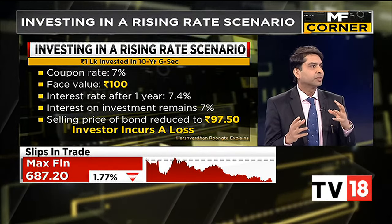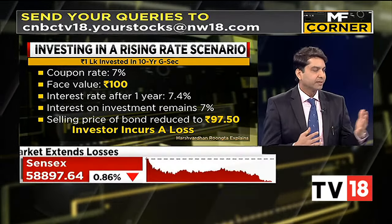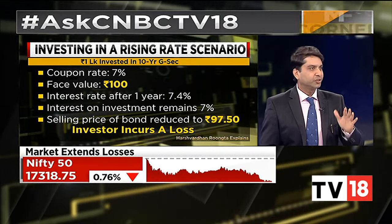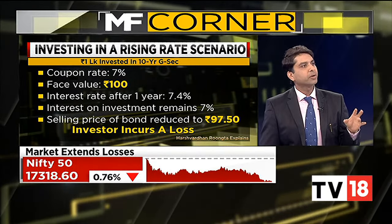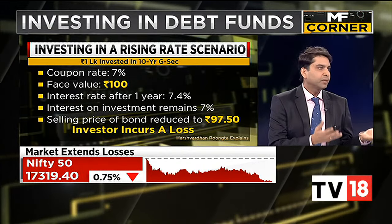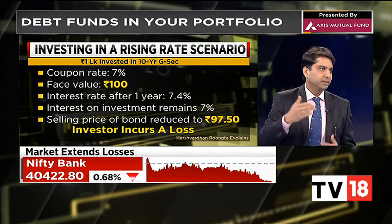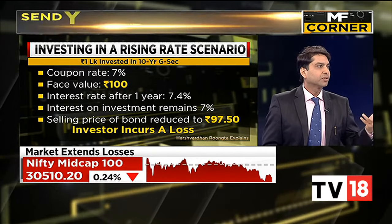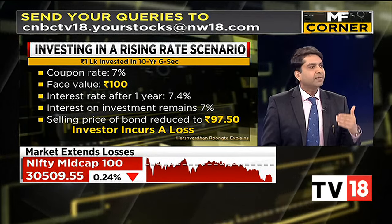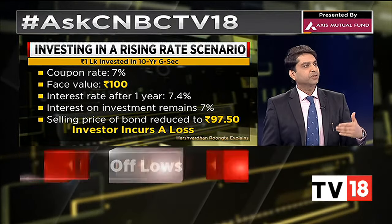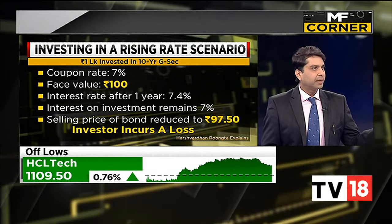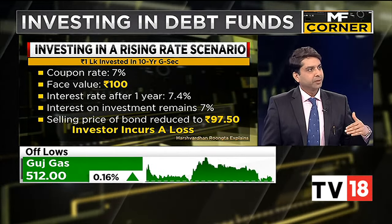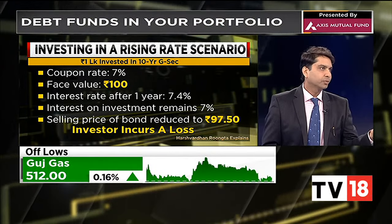Interest rates and the price of bonds are inversely related. For example, suppose Mr. X had invested a lakh of rupees in 10-year GSecs — government securities — and the coupon rate was 7% with a face value of 100. Now, if the interest rate in the economy has moved to 7.4%, if I were to sell these bonds in the market, I'm not going to be able to sell at 100 rupees. I will have to sell my bonds at a discount — say at 97.5 — then the yield to maturity to the buyer is 7.4%. So if interest rates are going up, you find the prices of bonds coming down: a capital loss. Vice versa, if interest rates are going down, you'll start making capital gains.